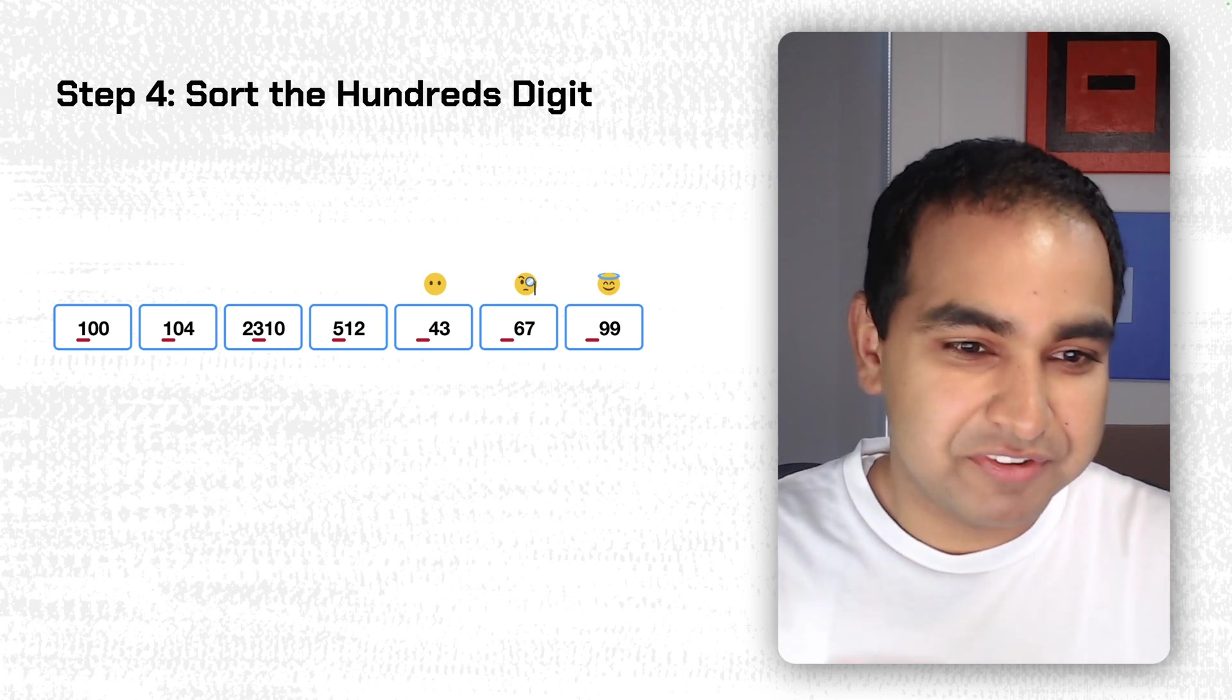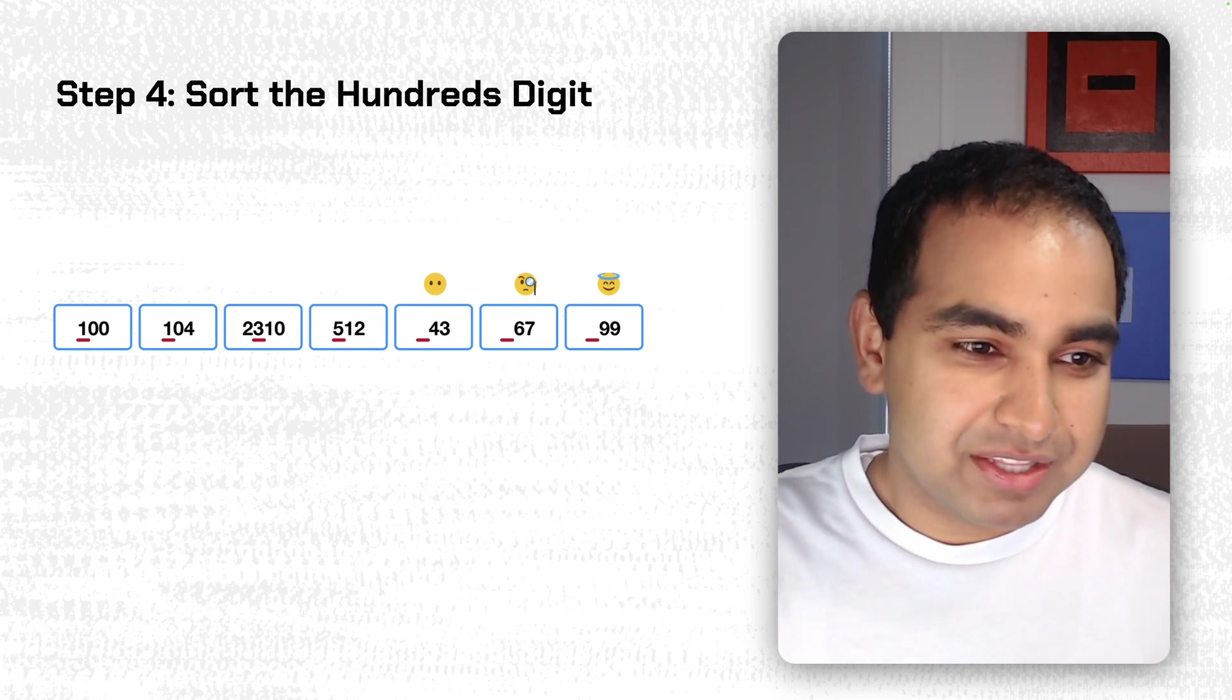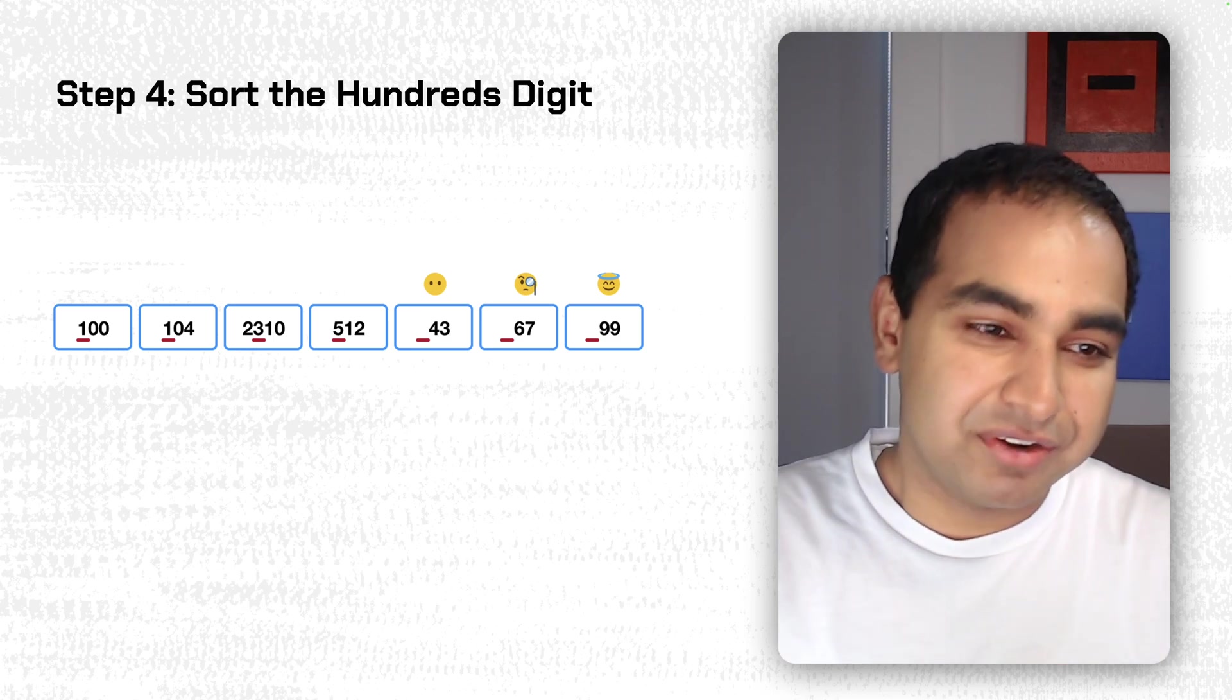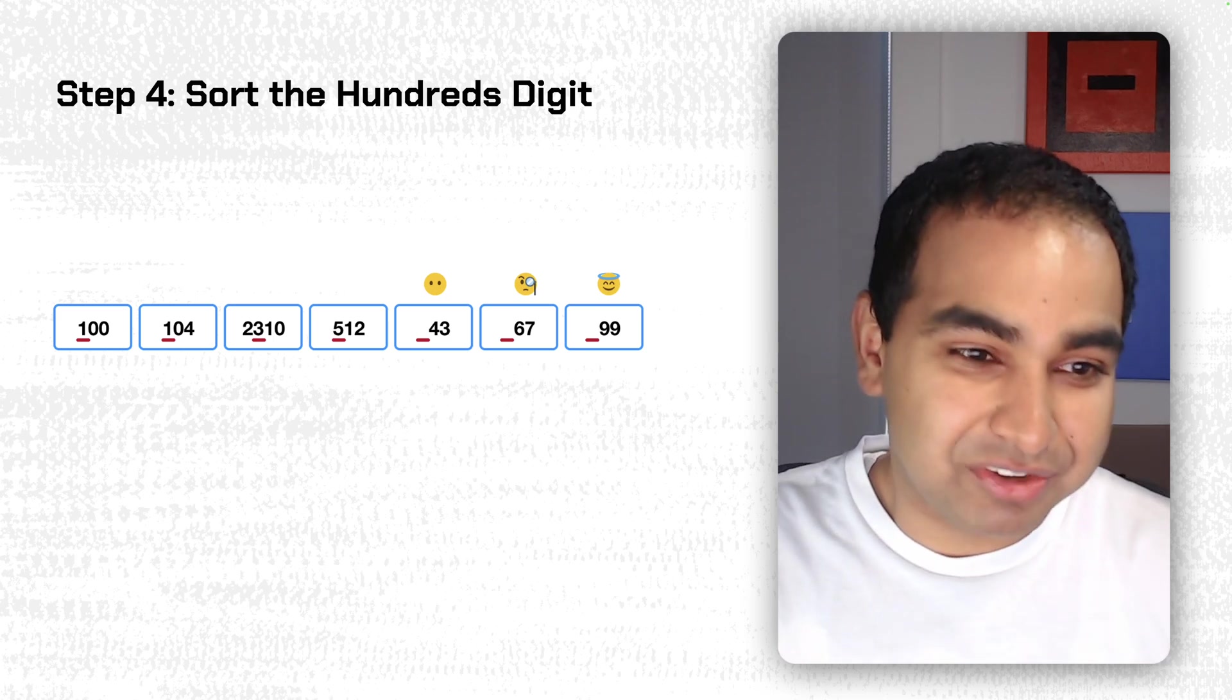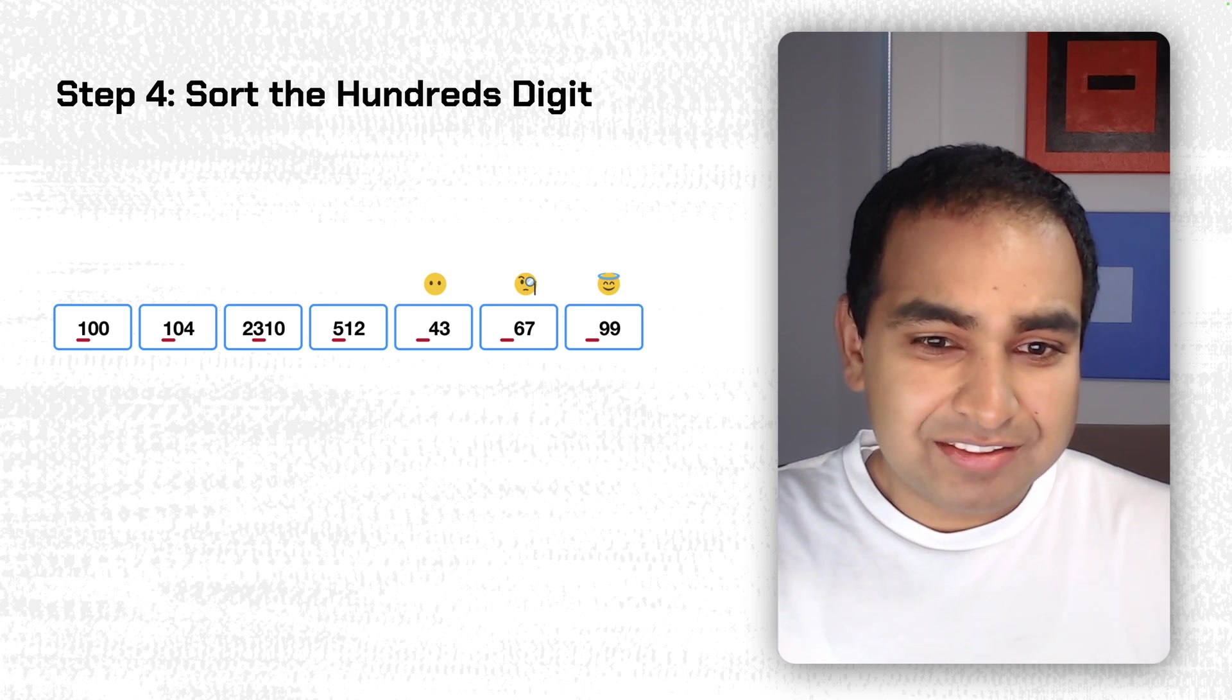Now we start by the 100s digit, which means after the 10s digit, we're now sorting by the 100s digit. And this again would be the third least significant space from there. And so it would be the 1 in 100, 1 in 104, 3 in 2310, 5 in 512. Now for 43, 67, and 99,